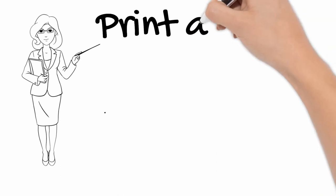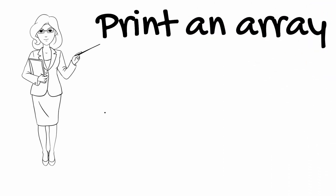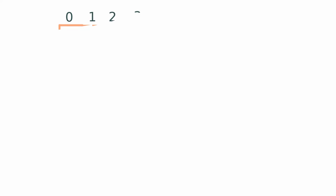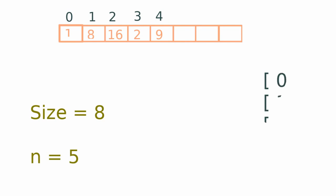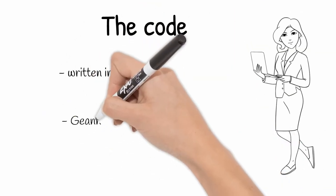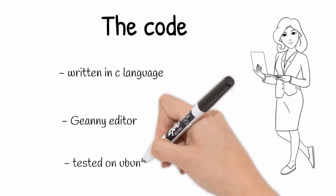In this tutorial I will show you how to print the elements of an array using the C language. Let's say that you have an array filled with some values. To print these values you only have to loop through this array. Since the indexing of the array starts from zero, and knowing the number of elements, you have to loop from index zero to the exact number of elements already in the array minus one. The code was written in C using the Geany editor and tested on Ubuntu.